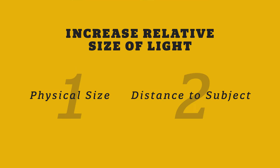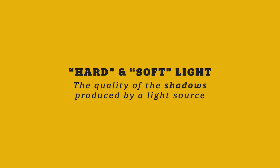Before we go further, let's define what we mean by soft light or harsh light. When we describe hard light or soft light, we're really describing the quality of the shadows produced by that light. Harsh light creates hard shadows with a very hard edge, whereas soft light has soft shadows with no hard edge — it's much more of a gradual falloff.